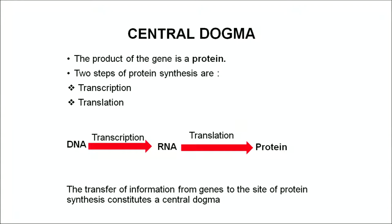We will move on to the next topic: the central dogma. Central dogma is the transfer of information from gene to the site of protein synthesis. The site of the gene in eukaryotes is the nucleus on the chromosome, and the site of protein synthesis is the cytoplasm. The product of the gene is an enzyme or a protein. There are two steps involved in protein synthesis: transcription, which is the formation of messenger RNA from DNA, and translation, which is the formation of proteins using messenger RNA in the cytoplasm.